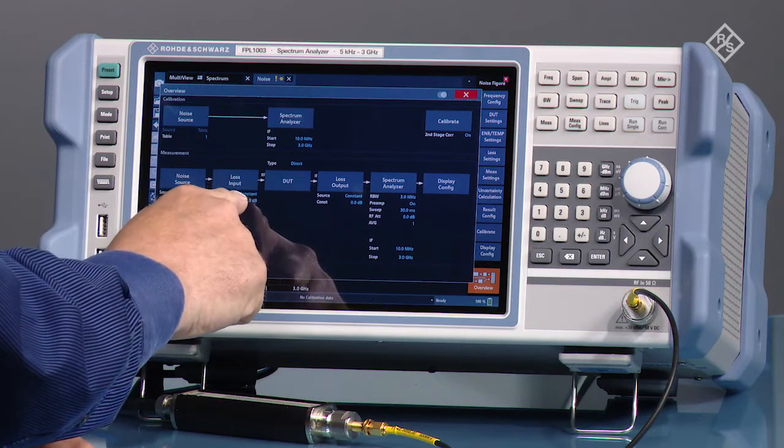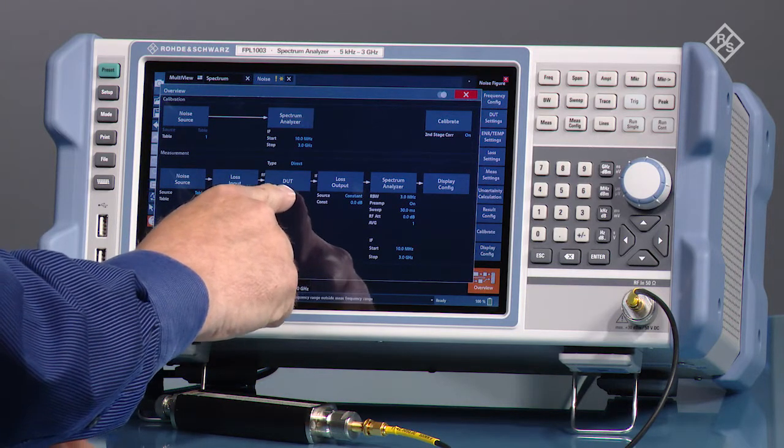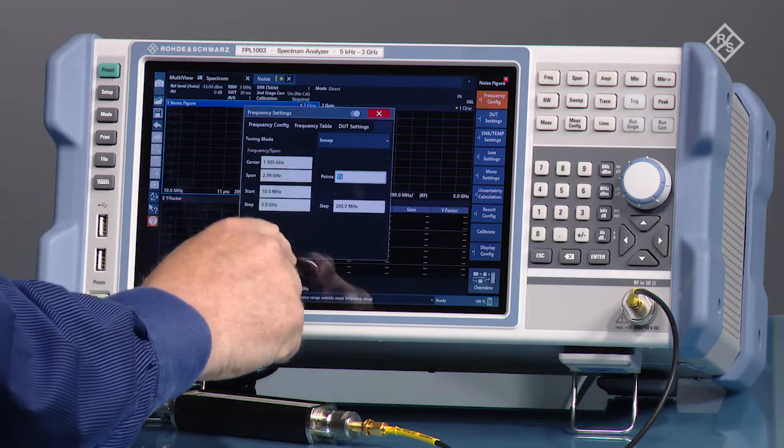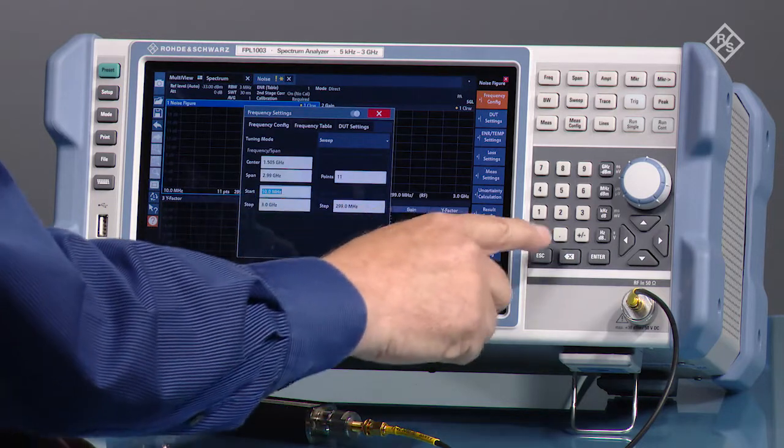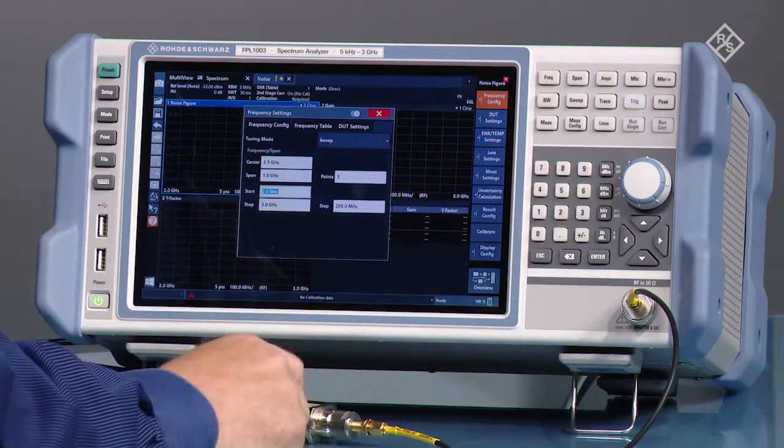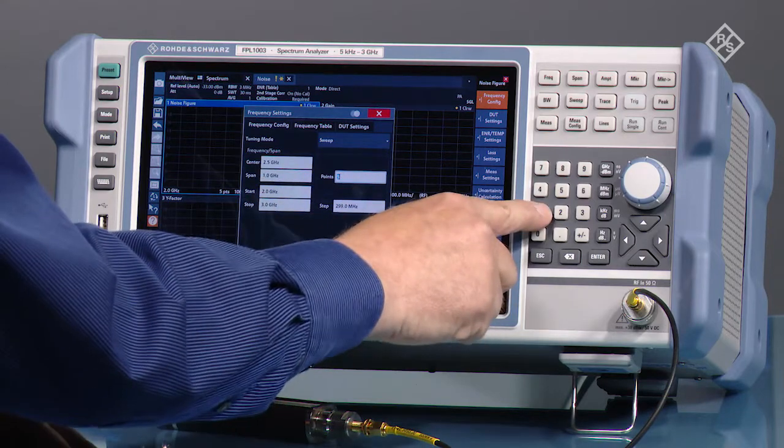We could enter loss input if we needed to but for this device we're not going to do that. Now we're going to go to DUT. We're going to set the frequency at 2 GHz to start and the number of points to 11.